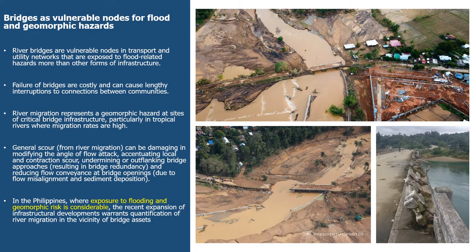As part of the rationale for this work, bridges are really vulnerable nodes for flood and geomorphic hazards — the most vulnerable nodes in transport and utility networks exposed to flood-related hazards. The failure and damage of bridges is a costly process and can cause lengthy interruptions to connections between communities. River migration represents a geomorphic hazard at critical bridge infrastructure, and as we showed in the last lecture, we're seeing really high rates of river migration in these tropical settings.